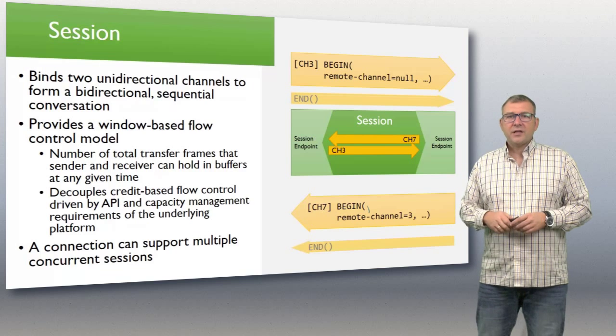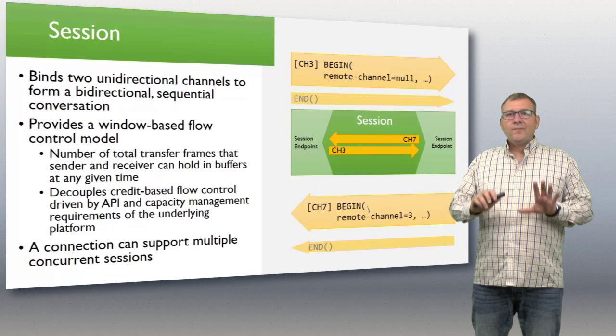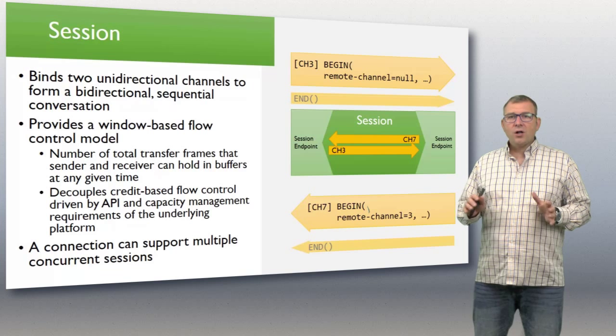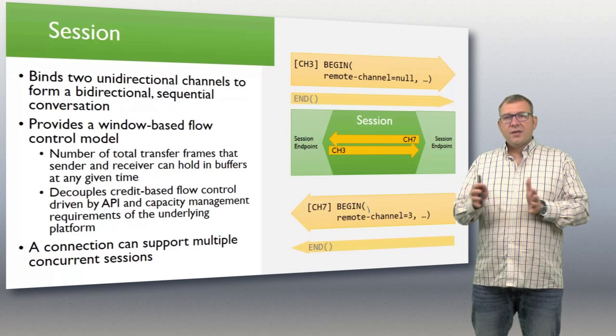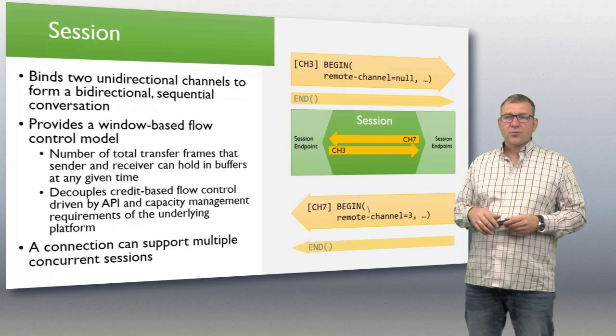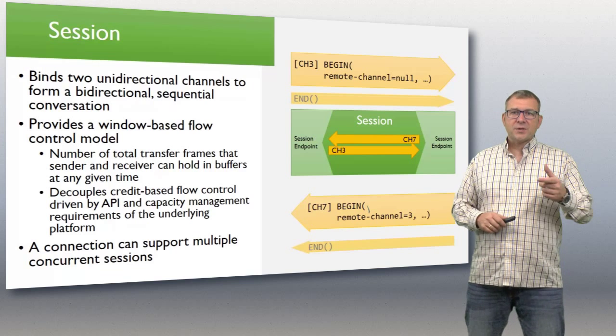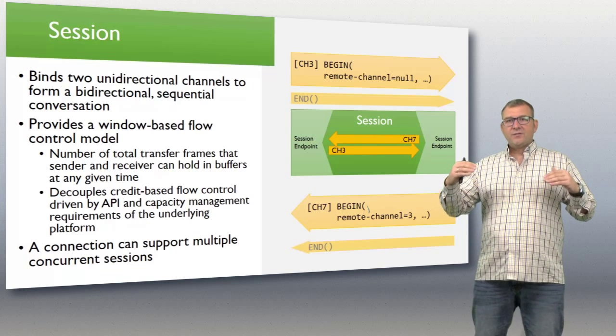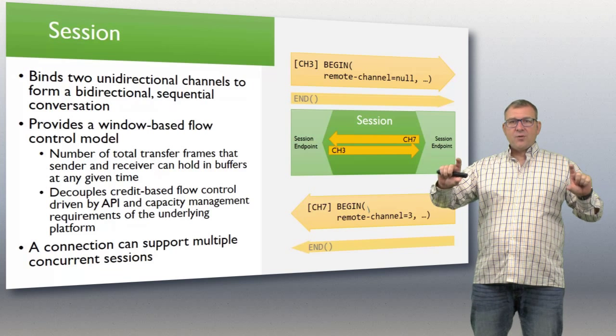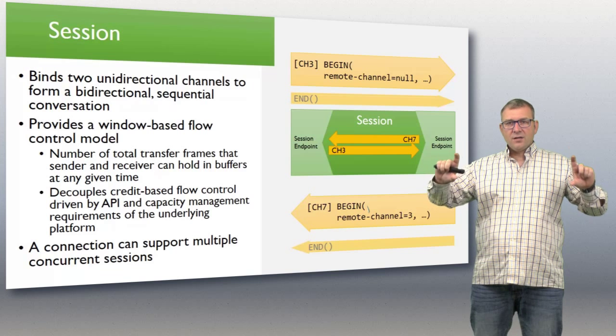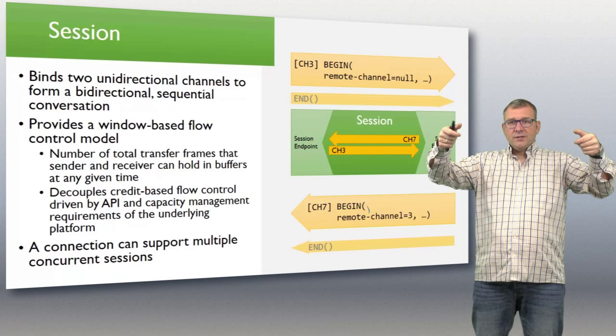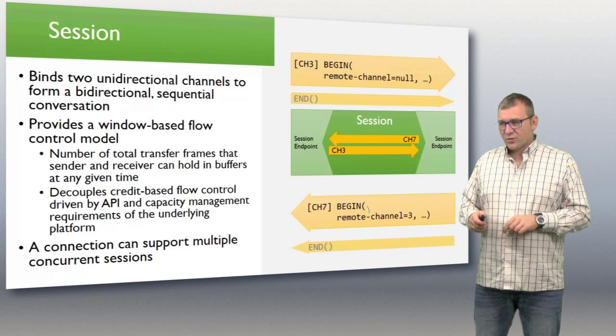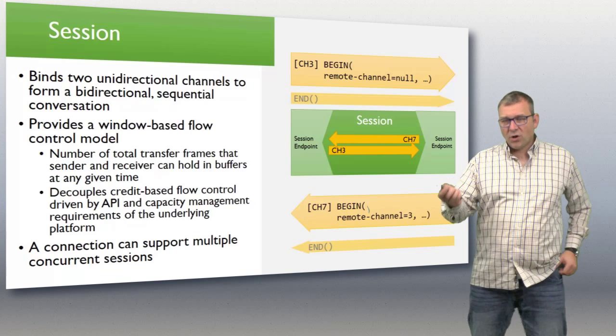If you have small constrained devices with very little memory, they can say, I can do this much and not more. Once the transfer windows are full, once the credit is used up, all communication on that session stops until that window is replenished with more credit, which happens through the flow construct. But it's a window-based flow control model that is valid for the session. If we think back to the connection, you can have the main flow, what the application is willing to handle, all of that is multiplexed on one session. You can have a second session that has a different flow control model that may have a different buffer setup, which can be used for alerts and for express traffic. That's where you have that flow control model underneath. A connection can support multiple concurrent sessions.